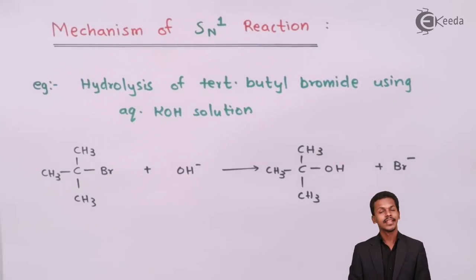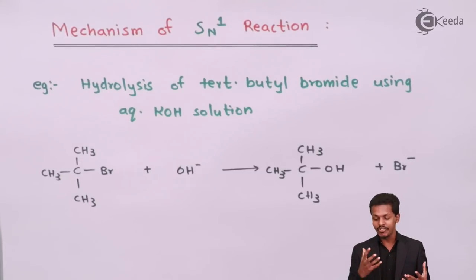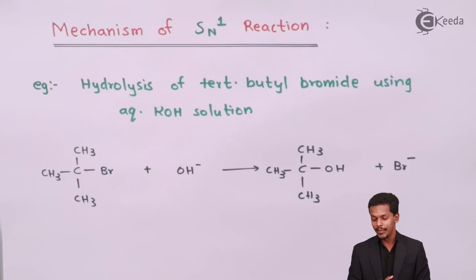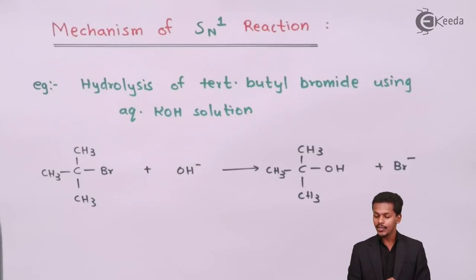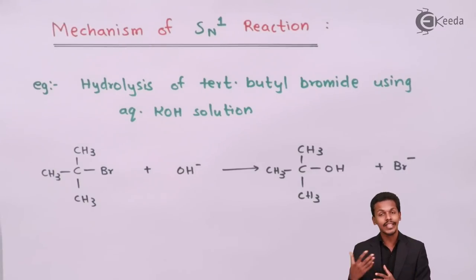The reaction also produces Br⁻, or we can call it KBr. There is also certain stereochemistry involved during conversion from tertiary butyl bromide to tertiary butyl alcohol, but we'll cover that later. It has been found that the rate of this nucleophilic substitution reaction depends on tertiary butyl bromide — only the substrate, not the nucleophile.